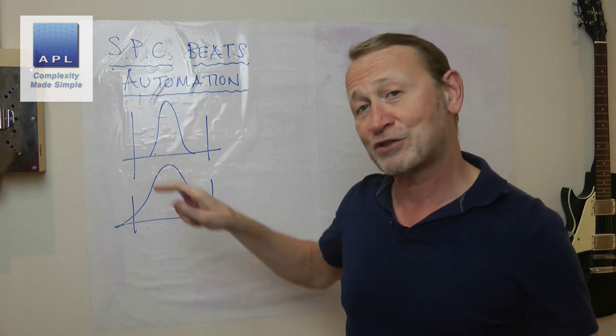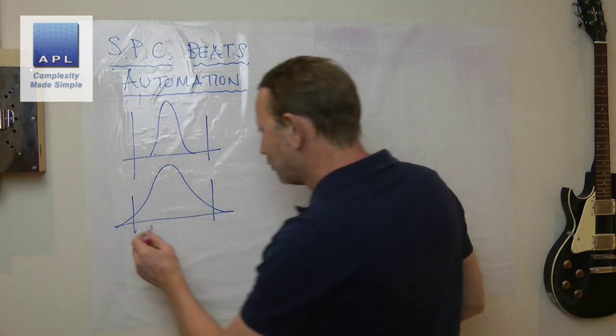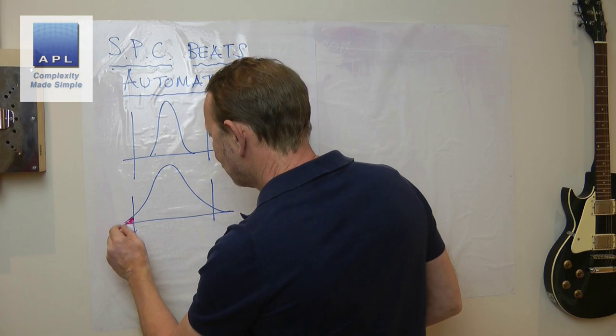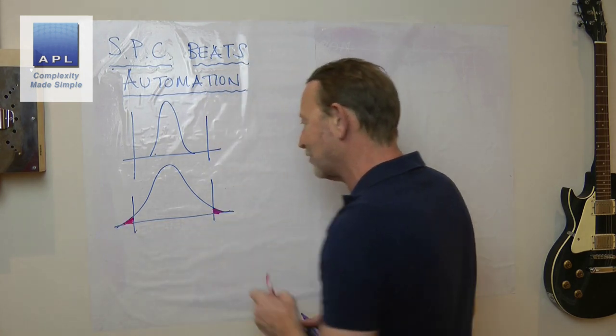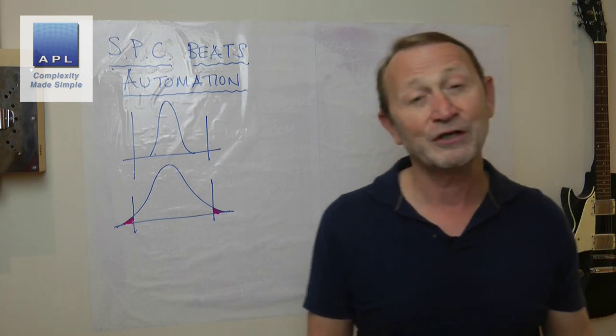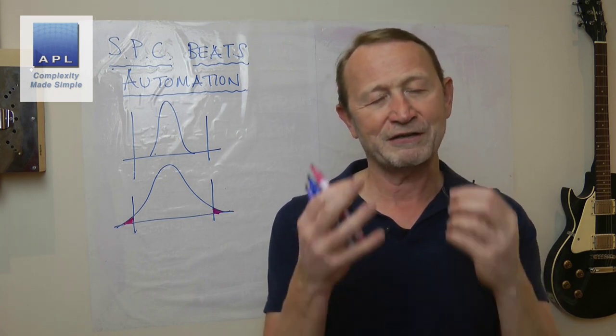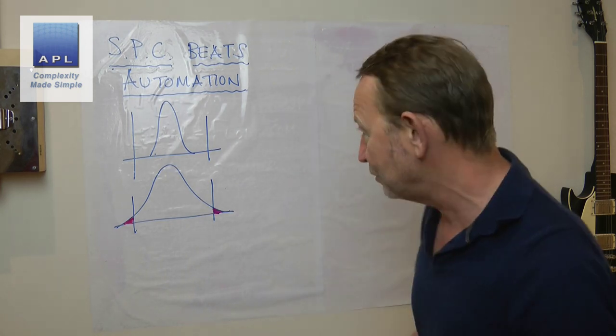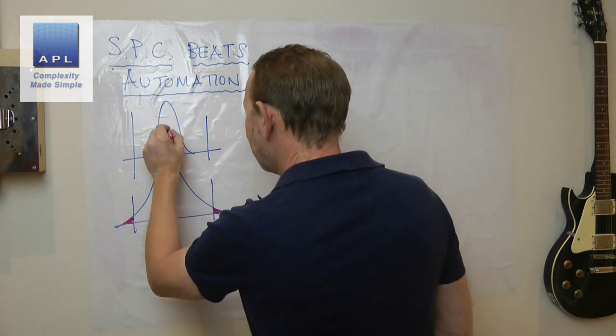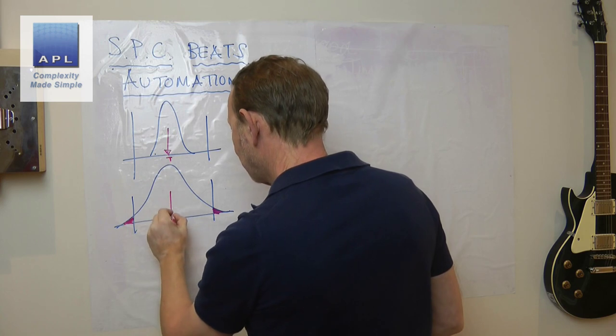Sometimes it produces a result that's inside the tolerances and you're all good. Sometimes what it does is it produces variability that's too big for the tolerances. You get defects in the tail and you get a problem. But look at these diagrams. If your setter could see the diagrams, what's the only thing they would do?